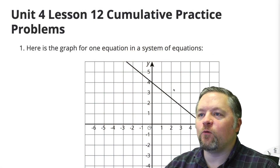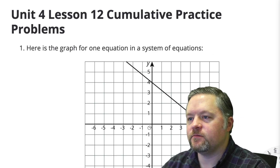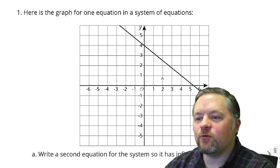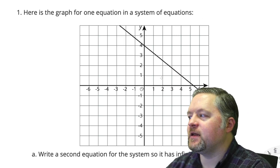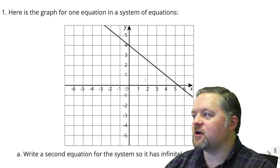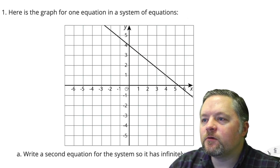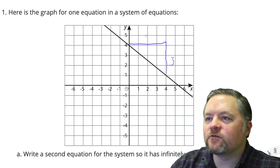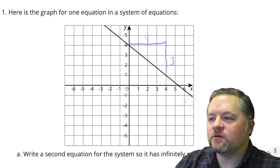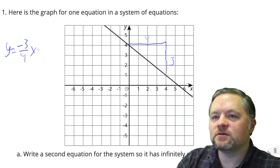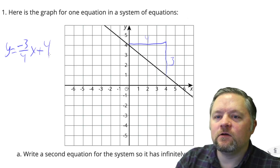Here's the graph for one equation in a system of equations. Write a second equation so it has infinitely many solutions. Let's start out by figuring out the equation of this line. The slope looks like a rise of 3, run of 4, and it's going down. So our original line is y equals negative 3/4x plus 4.